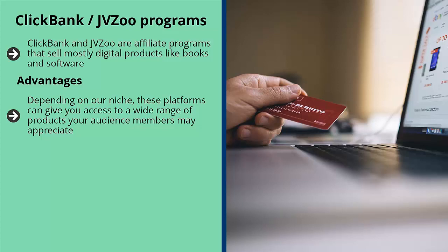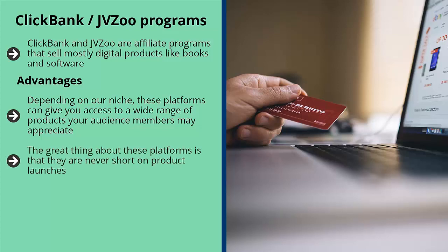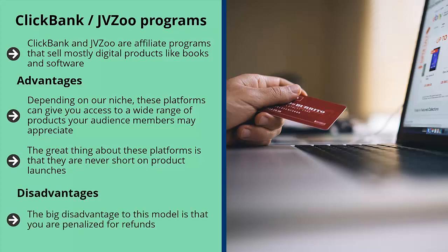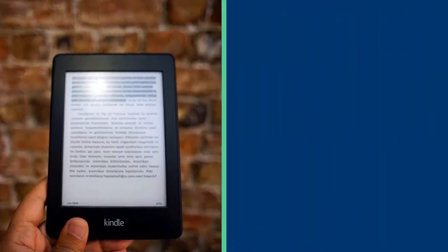If you're converting website visitors into list members, showing ClickBank and JV Zoo ads can convert well. These platforms are never short on product launches, which is a crucial advantage — if you know a product is launching, you can beat the competition by building a page or blog post around the upcoming launch. The big disadvantage is that you are penalized for refunds. You might get excited seeing a commission, then find two weeks later that the buyer refunded.